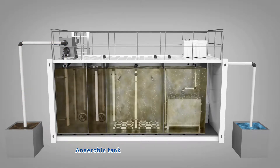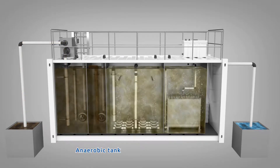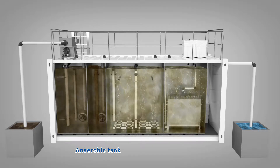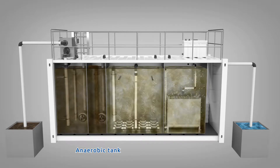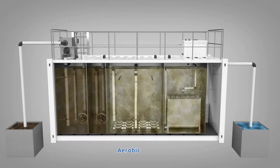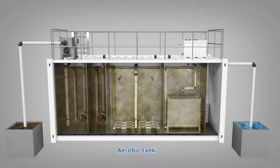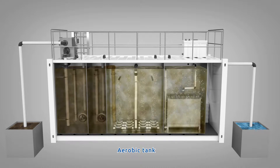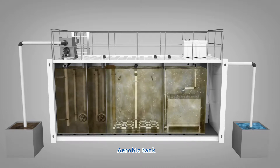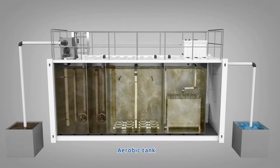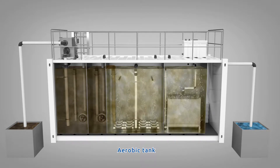From the anoxic tank, mixed liquor flows to the anaerobic tank. The anaerobic process triggers the discharge of phosphorus by microbes in the anaerobic state reaction. From the anaerobic tank, the wastewater flows to the aerobic tank where oxygen is injected using air blowers and a diffused aeration system. In this oxygen-rich environment, organic material and ammoniacal nitrogen are biologically oxidized into carbon dioxide, nitrate, and water.